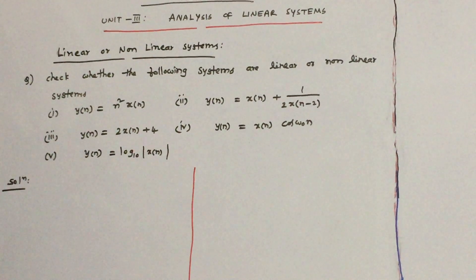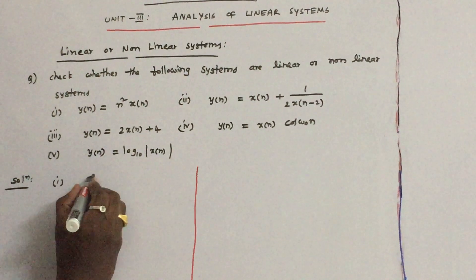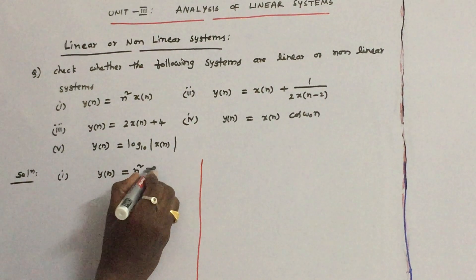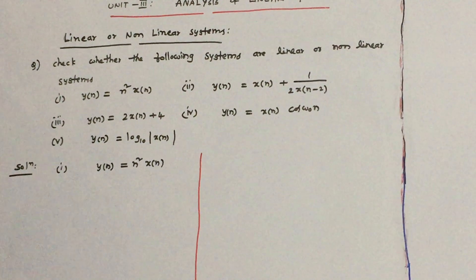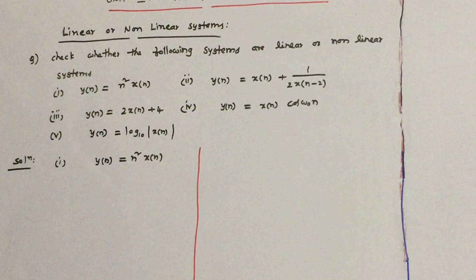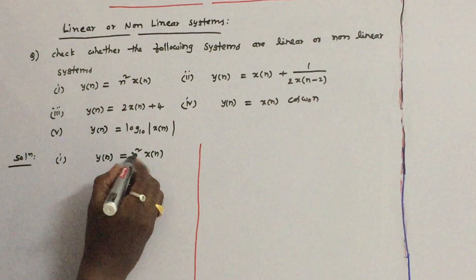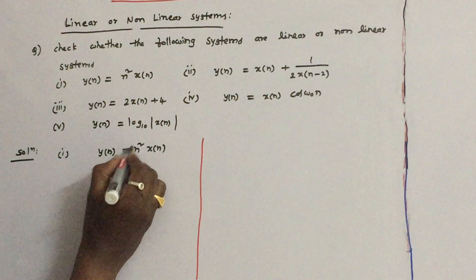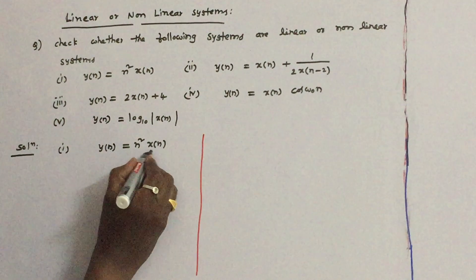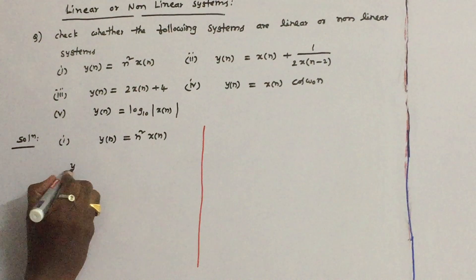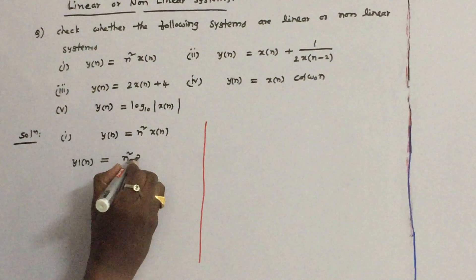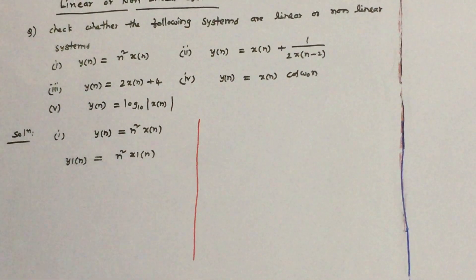So what is the first equation? y(n) is equal to n² into x(n). This is the input to the system and this is the response or output. When this input is given, the system will simply multiply with n² and give the response. So if x1(n) is the input, the output y1(n) is simply x1(n) multiplied with n².